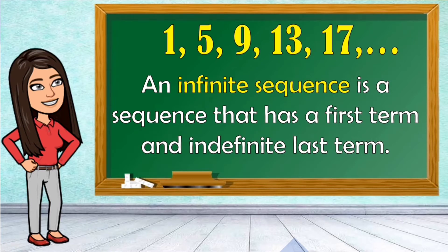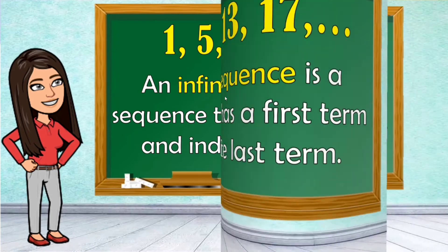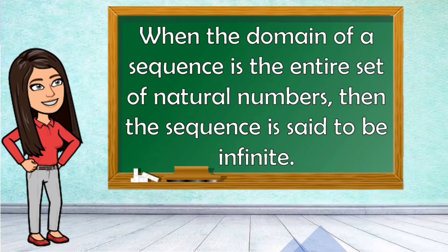An infinite sequence is a sequence that has a first term and an indefinite last term. So in this example, we have 1, 5, 9, 13, 17, and it will be continued. It is denoted by three dots called the ellipsis. These three dots denote that the sequence will continue endlessly. That's why it is called an infinite sequence. When the domain of a sequence is the entire set of natural numbers, then the sequence is said to be infinite.